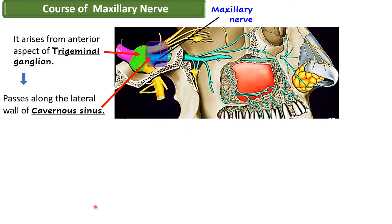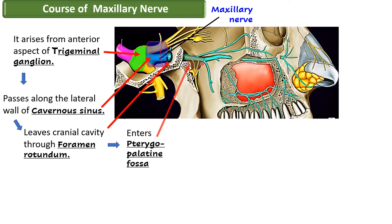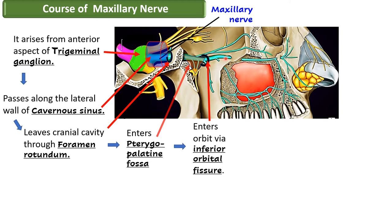After this, the nerve leaves the middle cranial fossa — that is, the cranial cavity — by passing through a foramen known as the foramen rotundum. By passing through the foramen rotundum, the maxillary nerve leaves the cranial cavity and enters into a triangular fossa known as the pterygopalatine fossa. After running along the upper part of the pterygopalatine fossa, the nerve leaves through an opening known as the inferior orbital fissure, leading into the orbit, and the nerve then runs along the floor of the orbit, or in the roof of the maxillary air sinus.